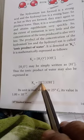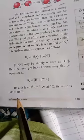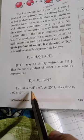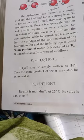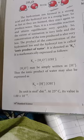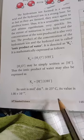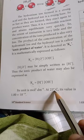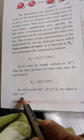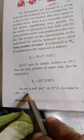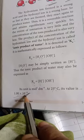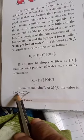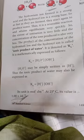The unit is mol squared per decimeter to the minus 6. At 25 degree Celsius, its value is 1.00 into 10 power minus 14. So this is the ionic product of water: 1.00 times 10 to the minus 14.